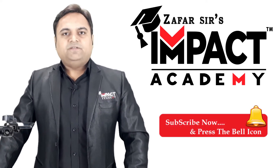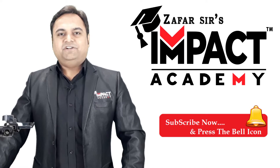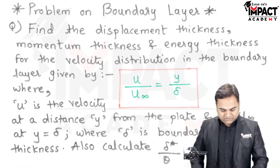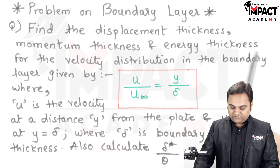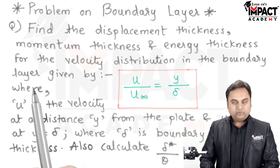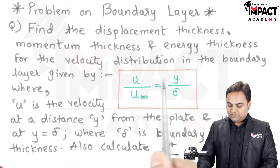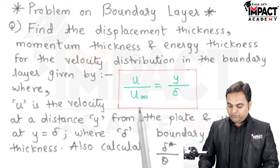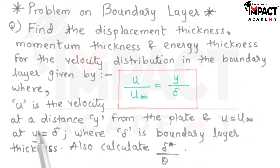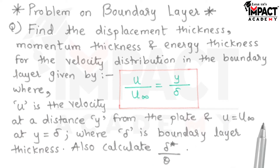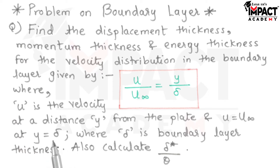Hi friends, in this video I will be explaining a problem on boundary layer. The question is: find the displacement thickness, momentum thickness, and energy thickness for the velocity distribution in the boundary layer given by the velocity profile u/u∞ = y/δ, where u is the velocity at distance y from the plate, and u∞ is the maximum velocity at y = δ, the boundary layer thickness.